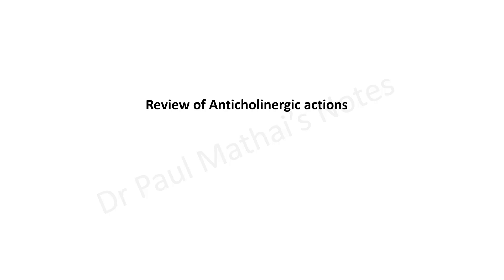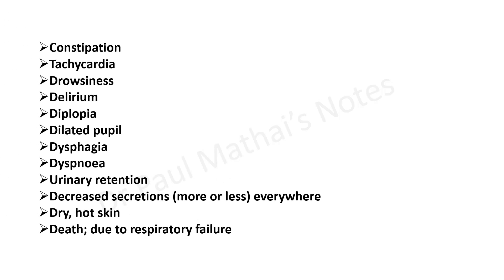When we speak about anticholinergic actions, we mostly refer to anti-muscarinic actions. These include pharmacological effects such as constipation, tachycardia, changes in CNS activity ranging from drowsiness to outright delirium, diplopia, dilated pupil or mydriasis, dysphagia, dyspnea, urinary retention, decreased secretions, dry hot skin, and in cases of very high doses, death due to respiratory failure.